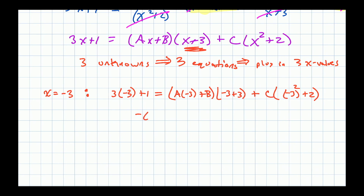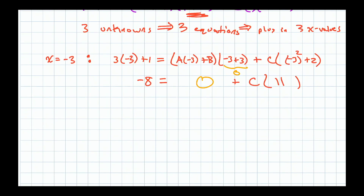Continuing to work out the algebra: plug in additional x values to find A and B. After substitution and simplification, we get negative 9 on the left-hand side, and continue solving the system of equations for the remaining constants.